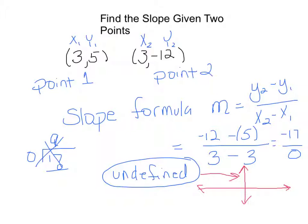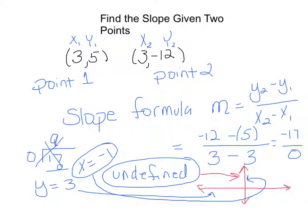Now, just extra information here. If we have a y equals some number, and we need to graph that, that will graph as a horizontal line with zero slope. But if we have an x equals something, that will graph as a vertical line with an undefined slope.